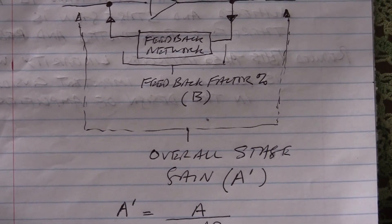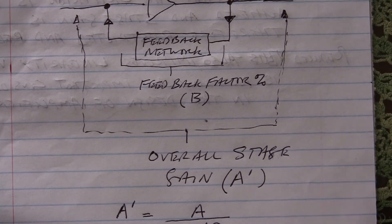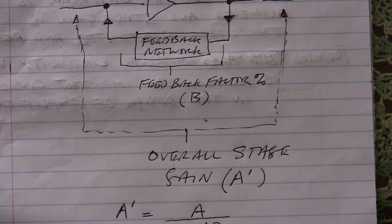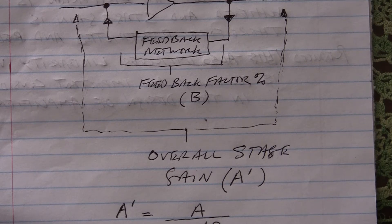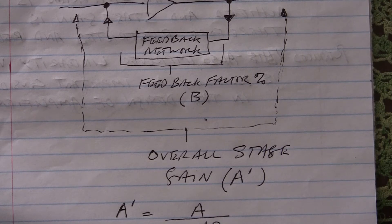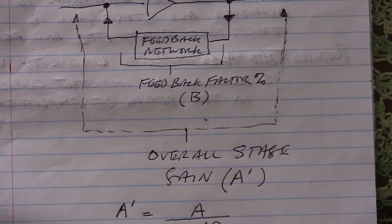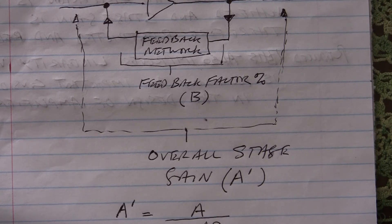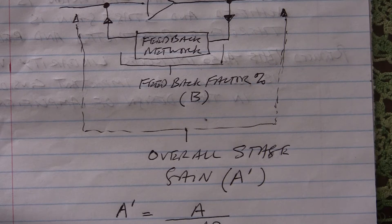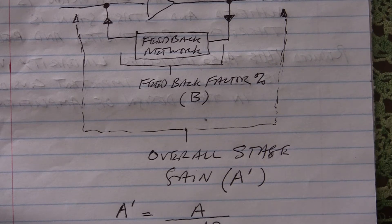As you can see from the diagram, we have an amplifier surrounded by a feedback network. This feedback network can either be positive or negative. Positive feedback will reinforce the signal and make it stronger. Negative feedback will reduce the signal amplitude and make it smaller, thus reducing the stage gain and ensuring that oscillation does not take place.